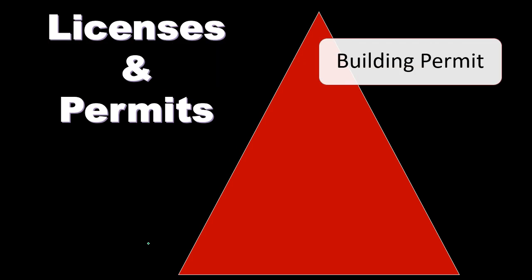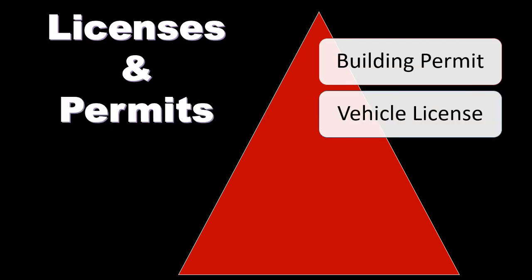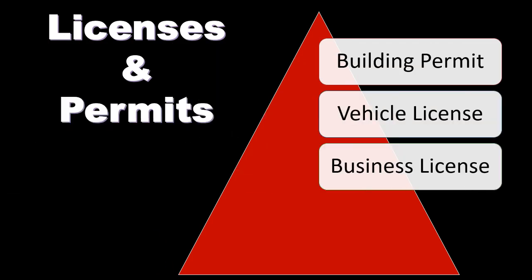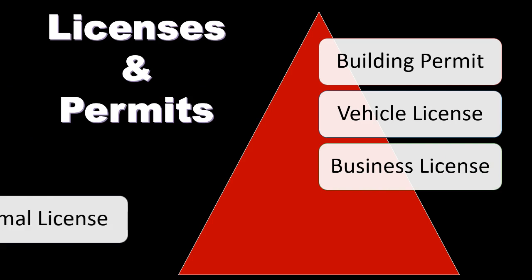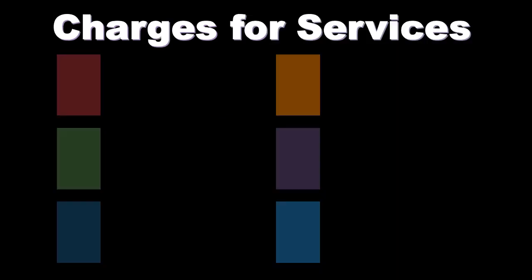License and permits are another form of revenue. They could include building permits, vehicle licenses, business licenses, and animal licenses — different types of licenses that would result in governmental revenue of some kind.